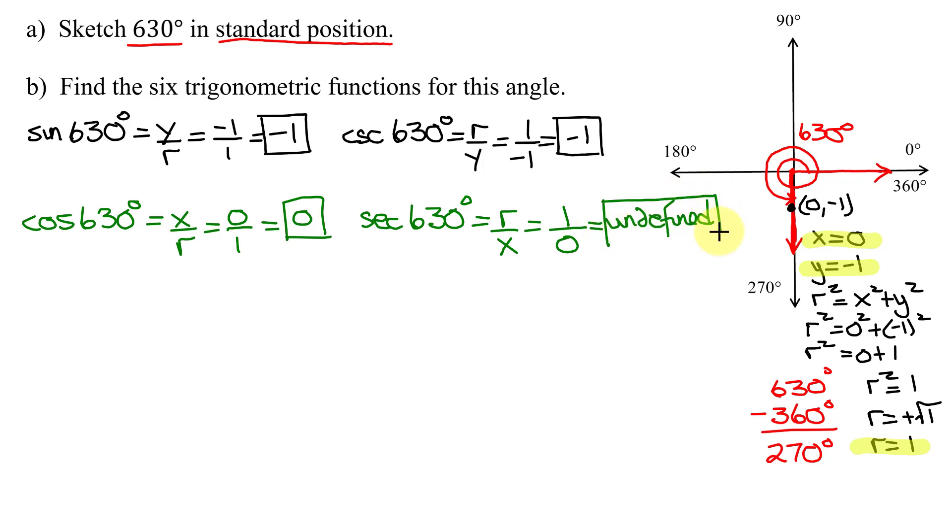And now let's find the last two trig functions, the tangent of 630 degrees. Well, that's y divided by x. y is negative 1, x is 0. So the tangent of 630 degrees can't divide by 0, so this is undefined.